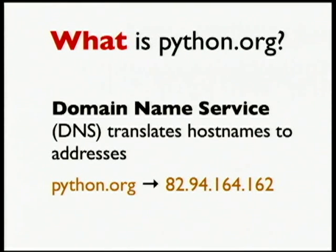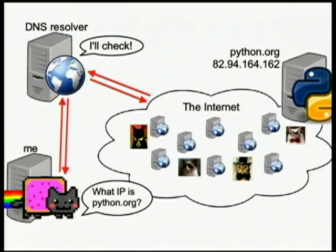DNS translates host names like python.org to IP addresses — unique numbers on the Internet that uniquely identify machines, that are easy for computers to talk about. In this case, python.org's IP address is 82.94.164.162. This literally happens when you browse the web: your machine makes a request to a DNS resolver whose job is to do that lookup, figure things out on the Internet, and report back your machine the IP address to use in subsequent communication.